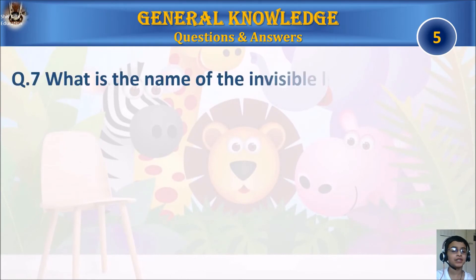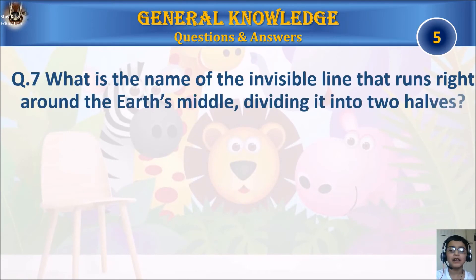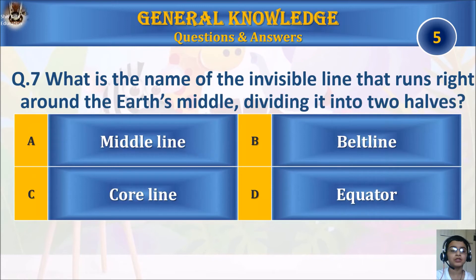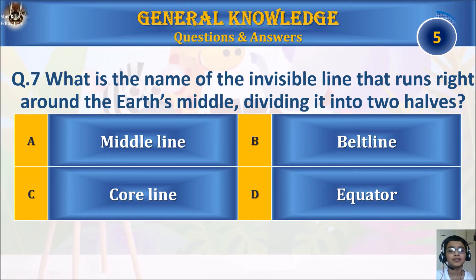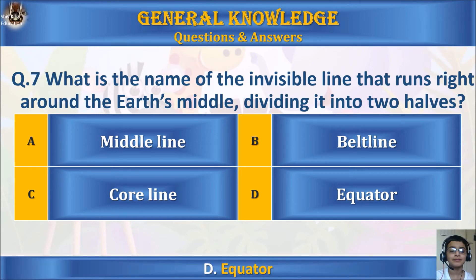Question 7: What is the name of the invisible line that runs right around the earth's middle, dividing it into two halves? A: middle line. B: belt line. C: or line. Or D: equator. Your time starts. The answer is D: equator.